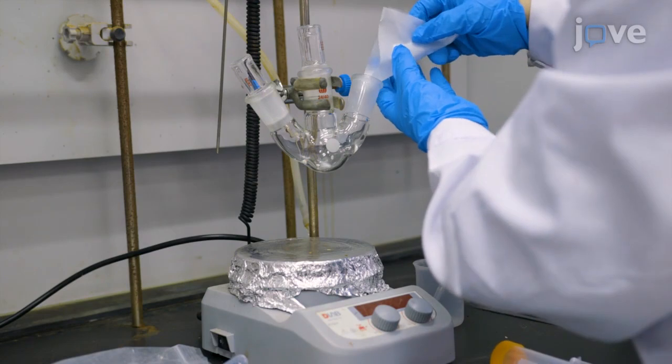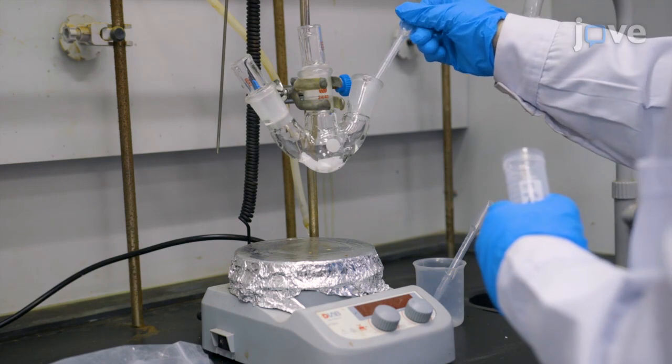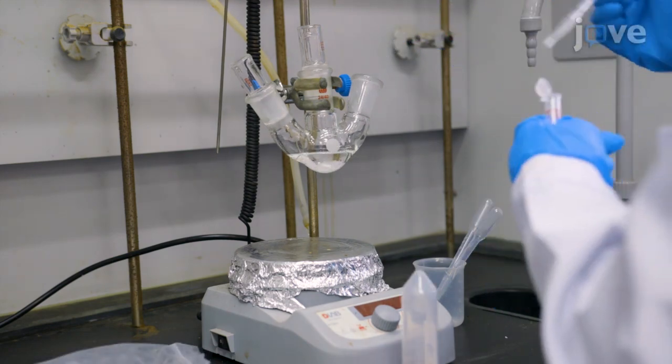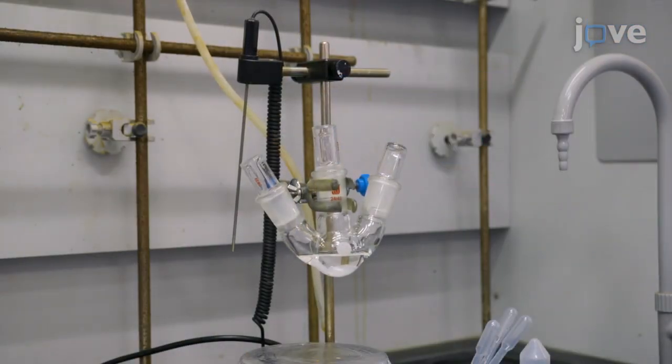During the incubation, add 4.28 grams of PEG, 1.8 milliliters of triethylamine, and 15 milliliters of anhydrous tetrahydrofuran to a new flask and close the flask with a glass stopper.